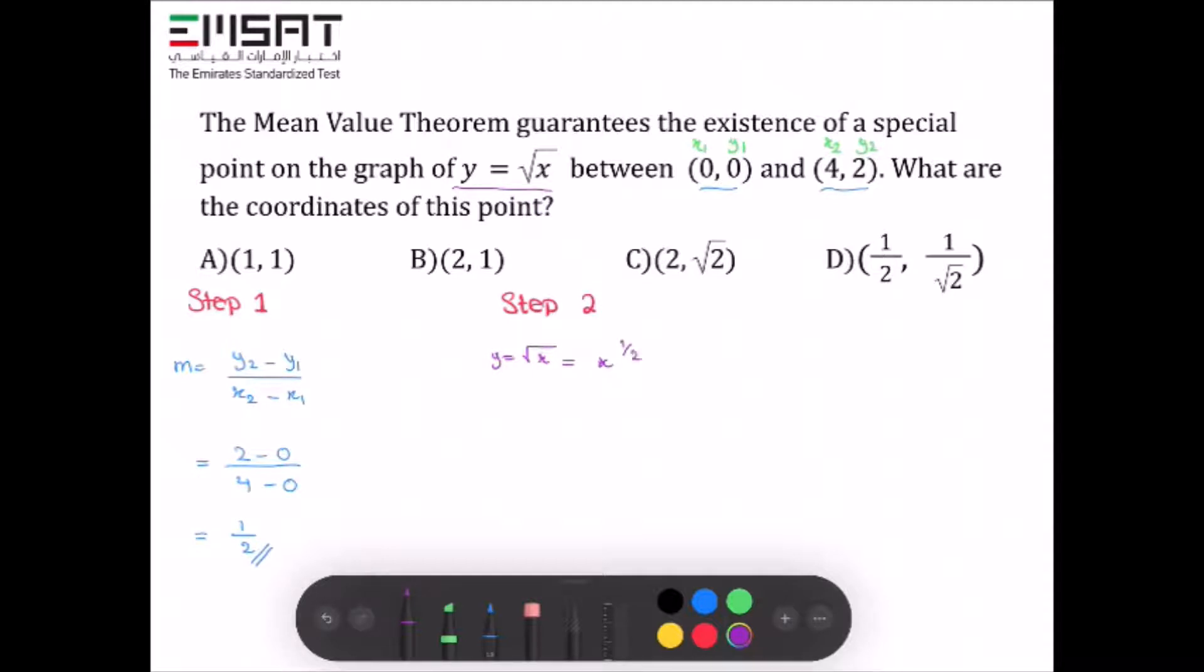Now, by using the power rule, we get y' = (1/2)x^(-1/2). We're not done yet - we need to convert it back to radical form.